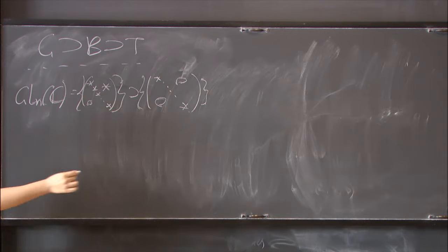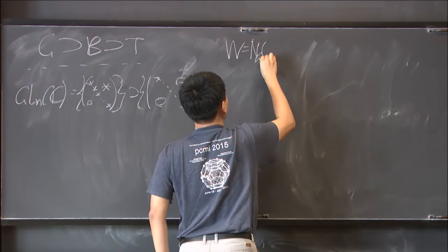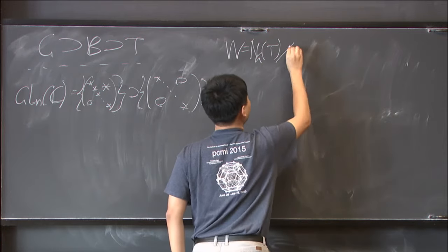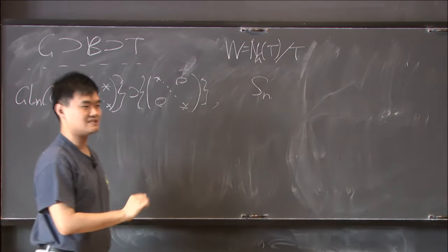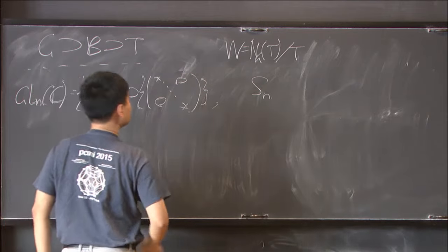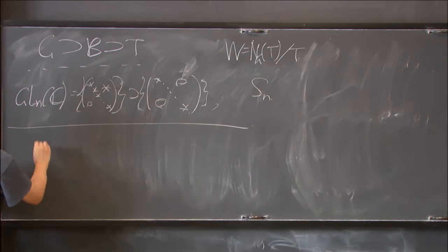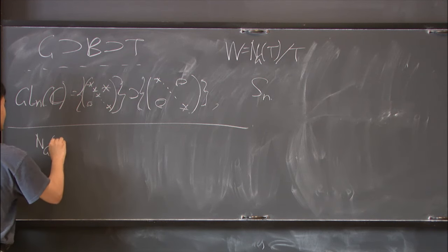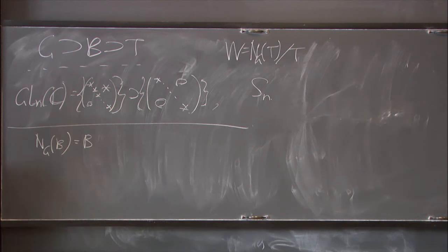I will also like the Weyl group to be the normalizer of T in G, modulo T. So in this example, W will be a symmetric group of N letters. And with this, since the normalizer of a Borel B in G is always B over any field, in particular over C,